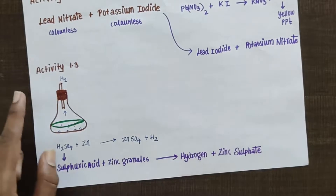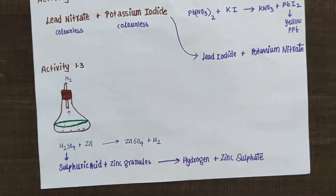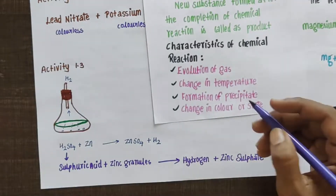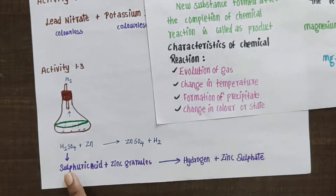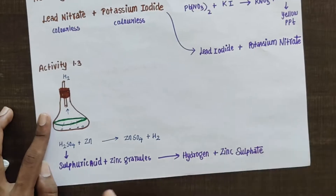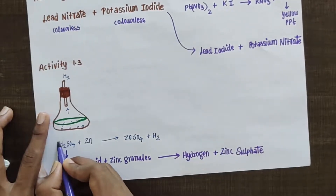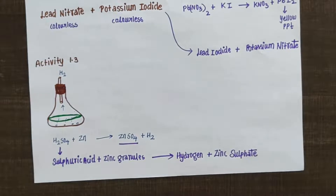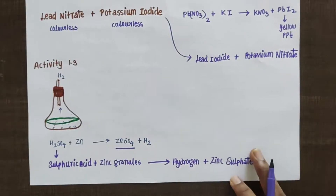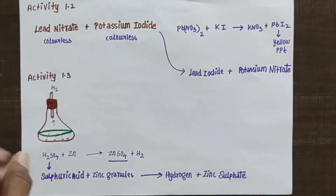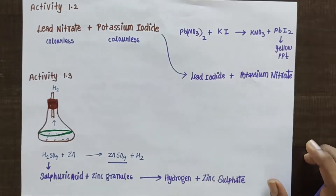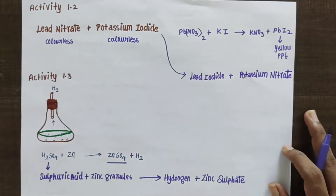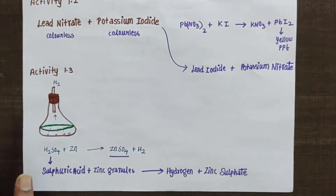At the end of the day, you can see evolution of gas. So this is your activity 1.3. What you are going to understand from here is that hydrogen gas is evolved — evolution of gas is a characteristic feature of a chemical reaction. These are the two activities we have discussed. You have to note the equations and the results. The formation of precipitate in activity 1.2 indicates a chemical reaction has taken place, and here evolution of gas is indicating the characteristic feature of a chemical reaction.